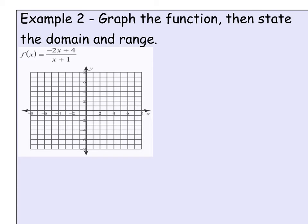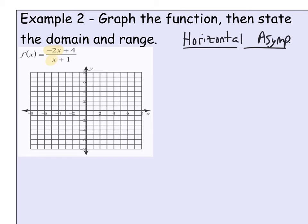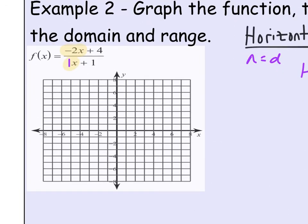Let's graph the function negative 2x plus 4 over x plus 1. Starting with the horizontal asymptote: the numerator is first degree and so is the denominator, so the degrees are equal. We use the ratio of the leading coefficients — negative 2x over 1x — giving a ratio of negative 2 over 1, which is negative 2. So the horizontal asymptote is at y equals negative 2.